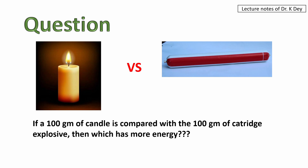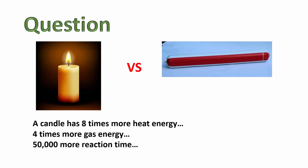Here is one question for you. On the left side you can see one candle and on the right side there is one cartridge explosive. If 100 grams of candle is compared with 100 grams of explosive, which has more energy? Obviously one would say the cartridge has more energy compared to the candle because we are not afraid to light a candle but we are afraid to handle explosives. However, that's not the truth. A candle releases eight times more heat energy and four times more gas energy than the cartridge explosive. So the candle actually has more total energy compared to the cartridge explosive.